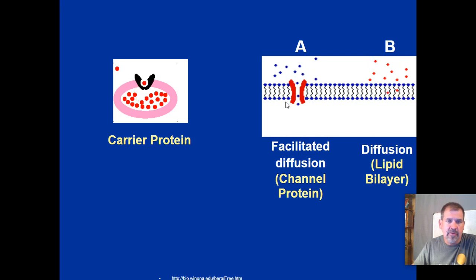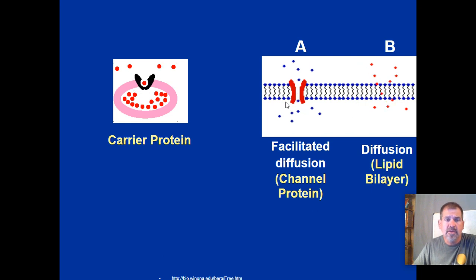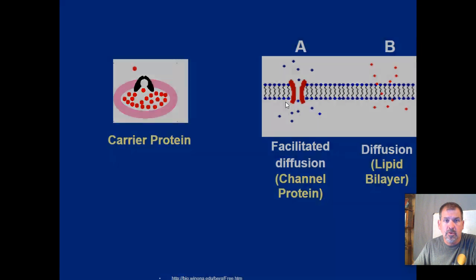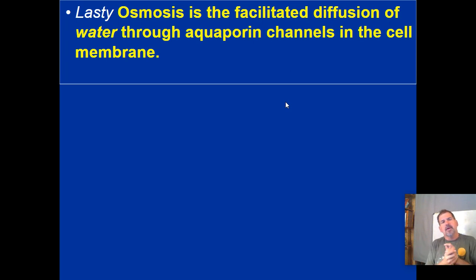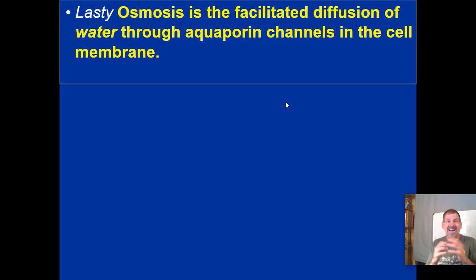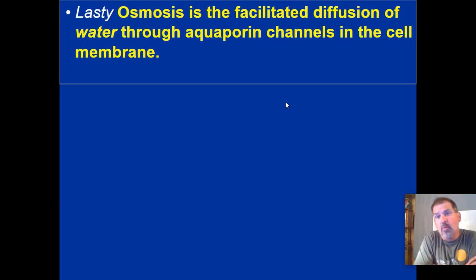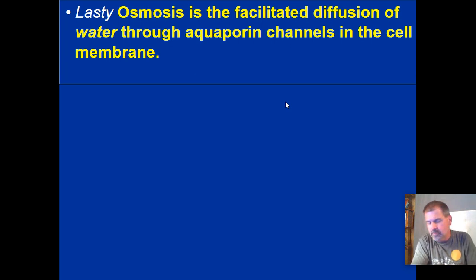Another example shows a carrier protein moving particles from high concentration — more crowded — to low concentration. Lastly, osmosis is the facilitated diffusion of water. Because water is so important, it gets its own special kind of diffusion called osmosis, and water moves through aquaporin channels in the cell membrane.